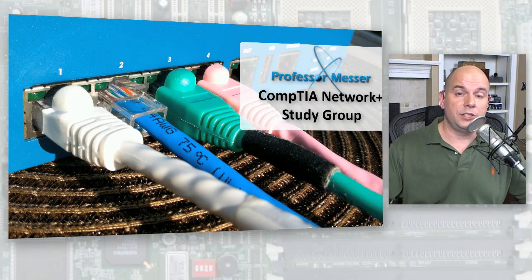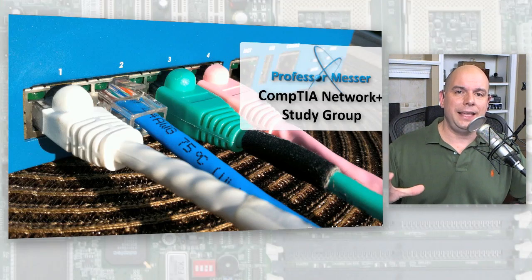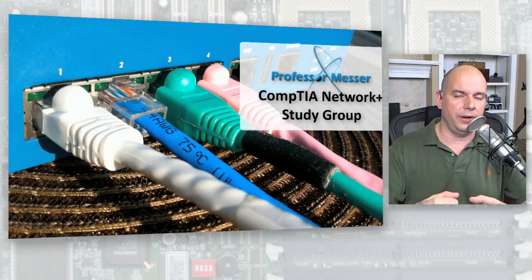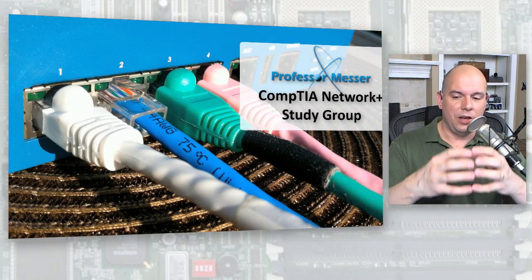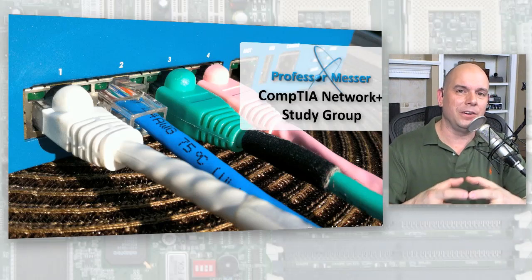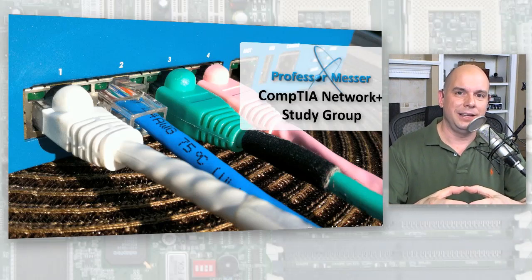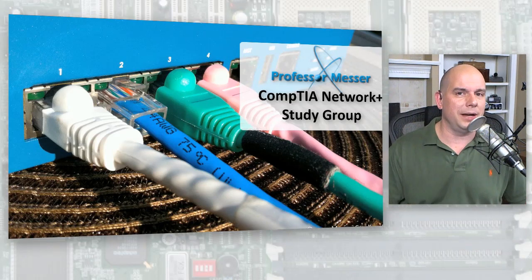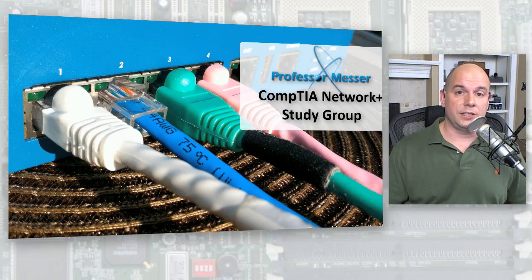In some environments, people love this because nothing can change your routing table. The routing table is exactly how you configured it, and there it will stay all the time — it never changes. I don't have to worry about that routing table being modified. If I'm thinking about that remote location, I know exactly what the routing table looks like. But sometimes you want more flexibility.